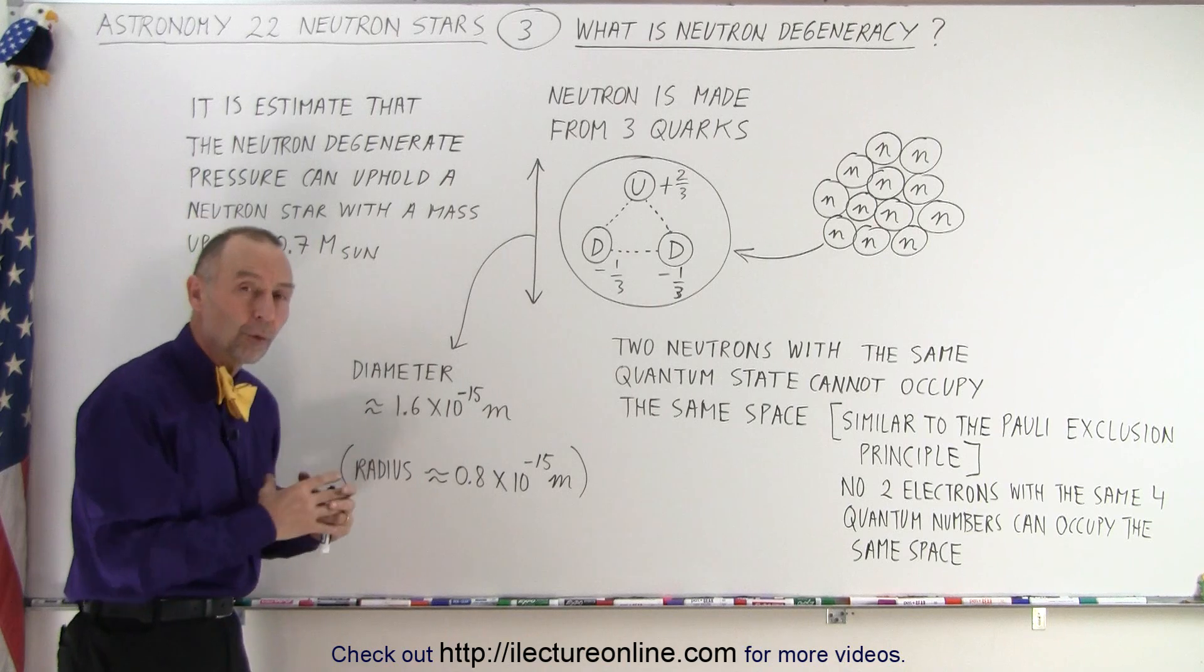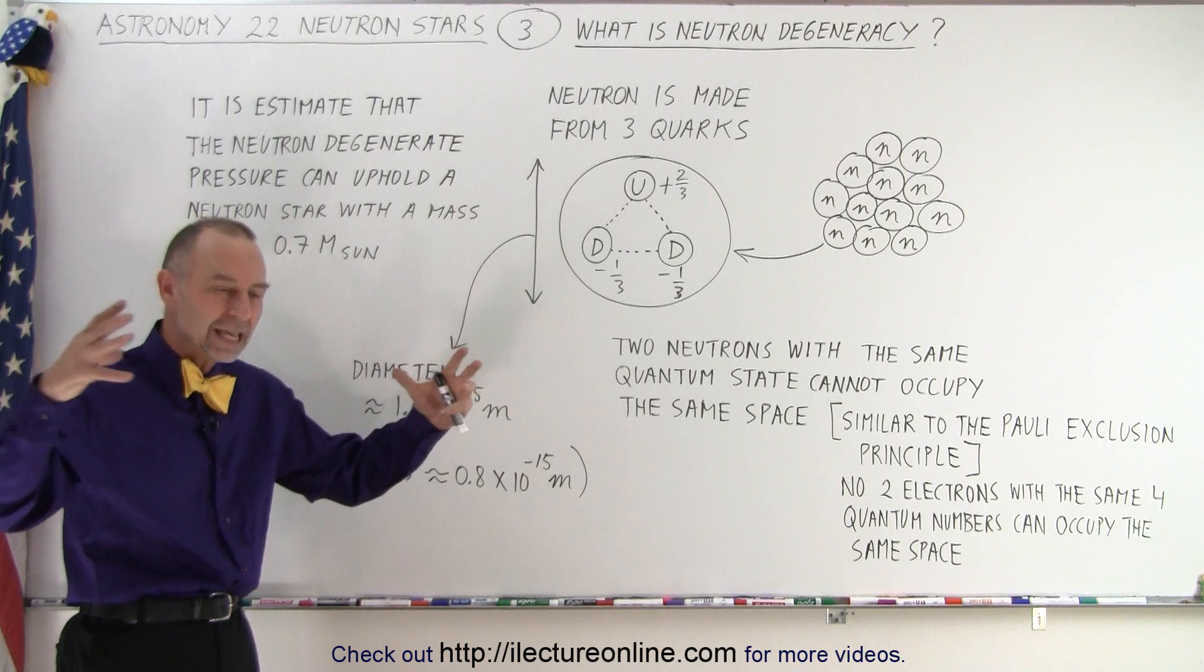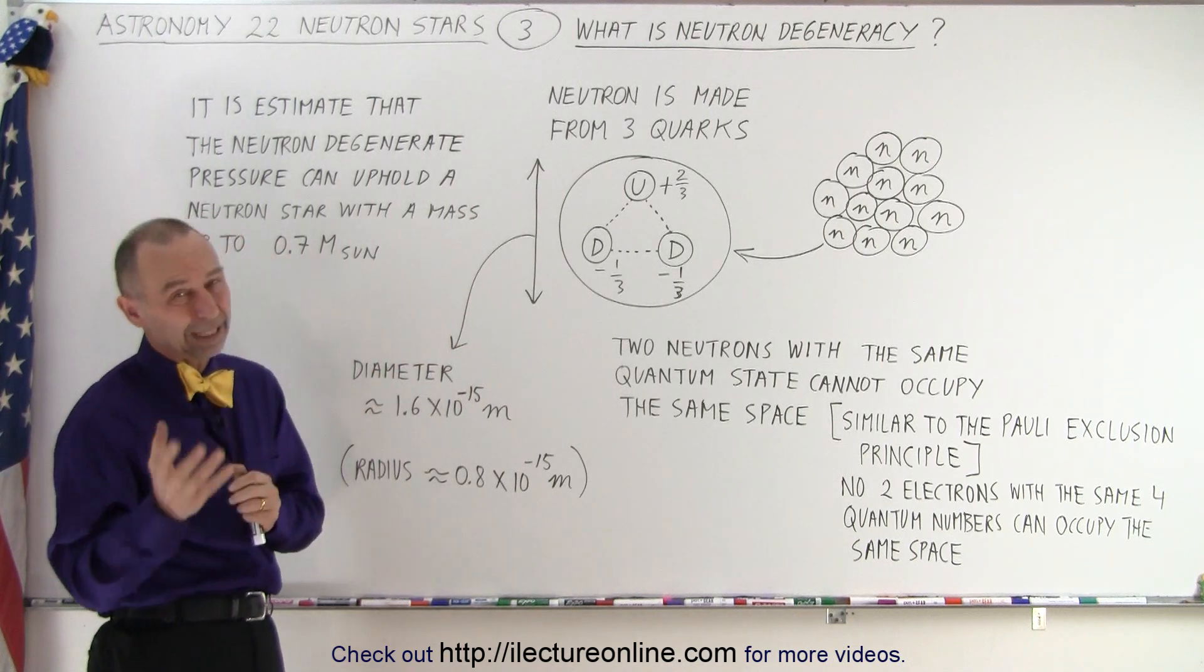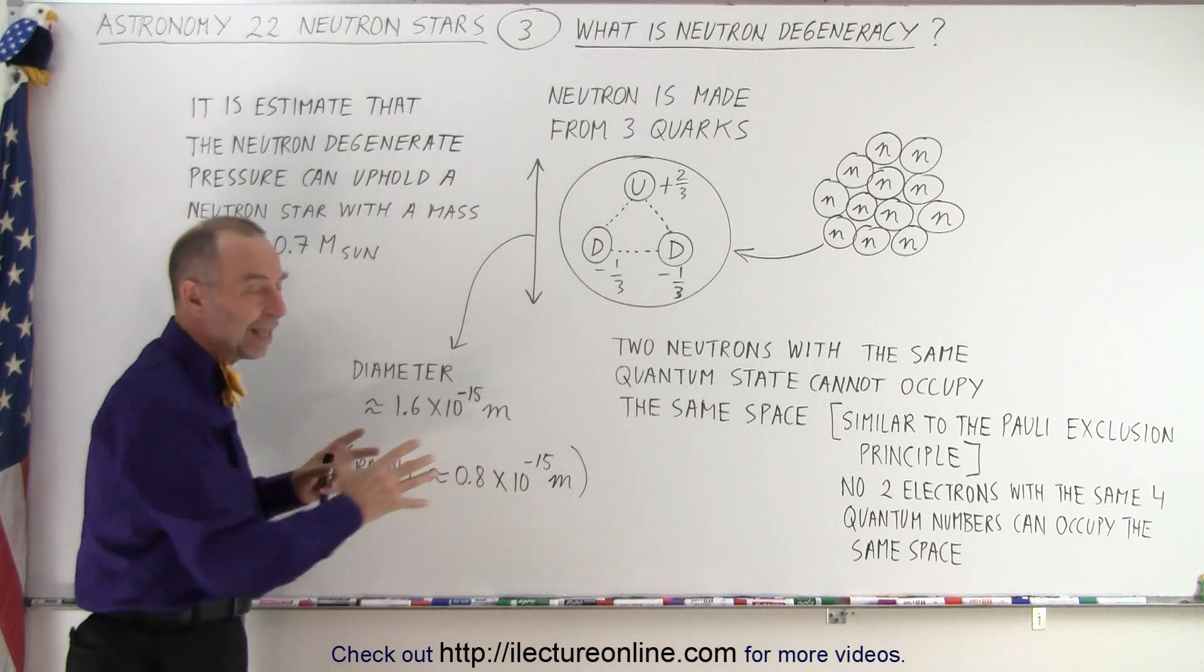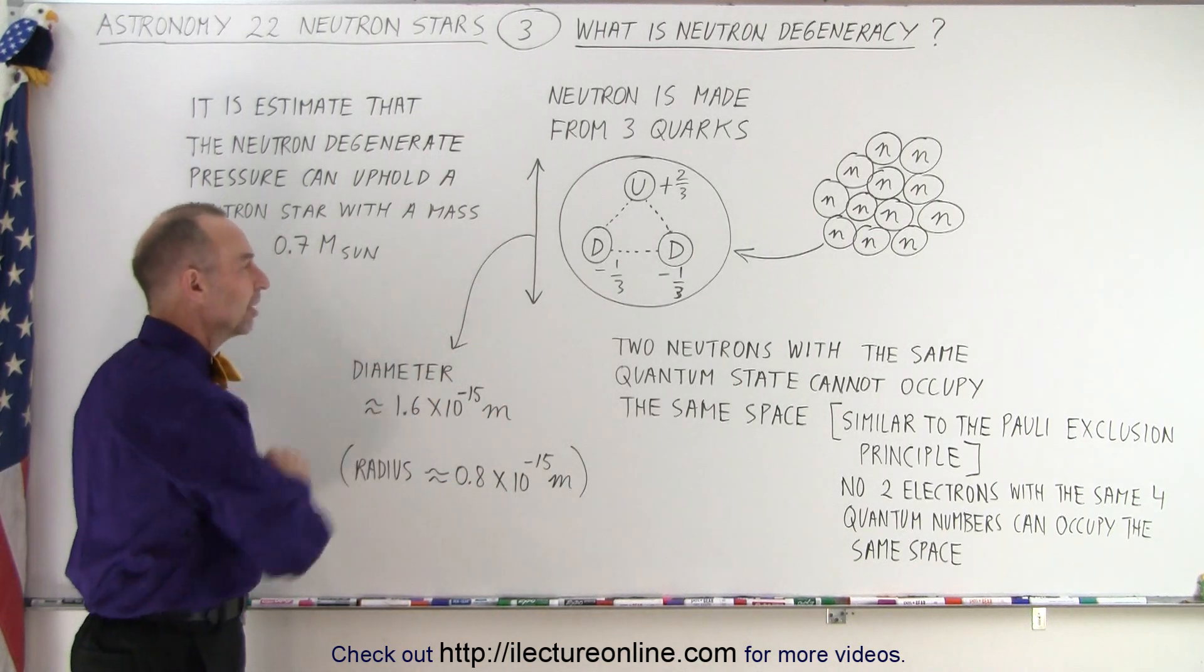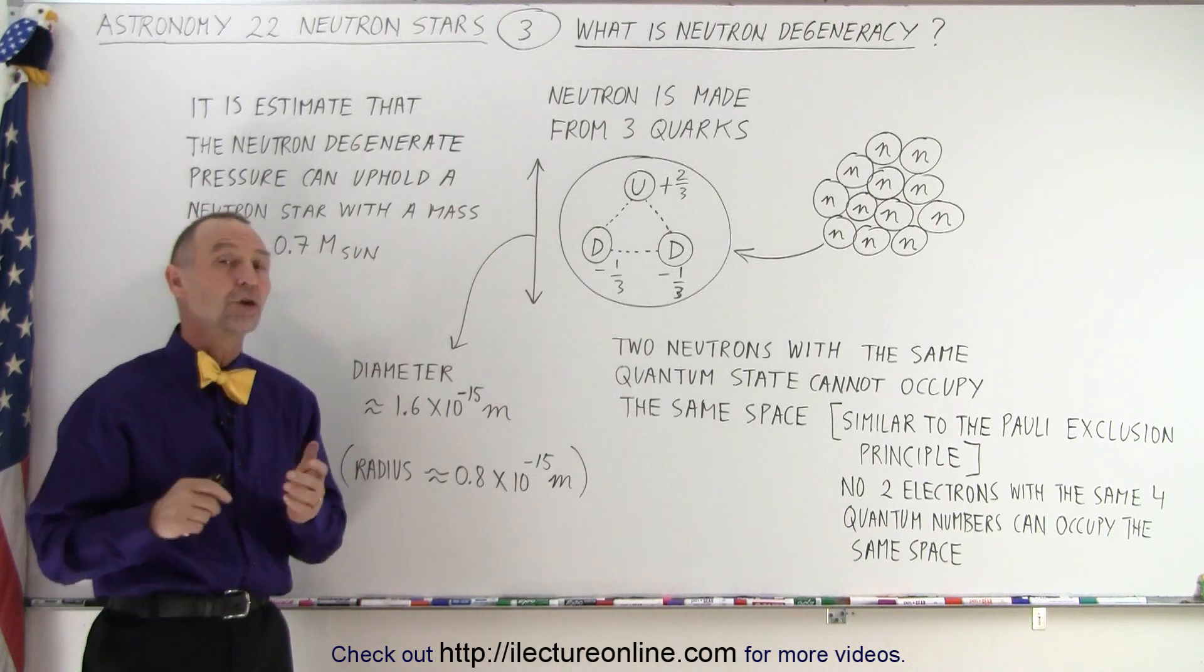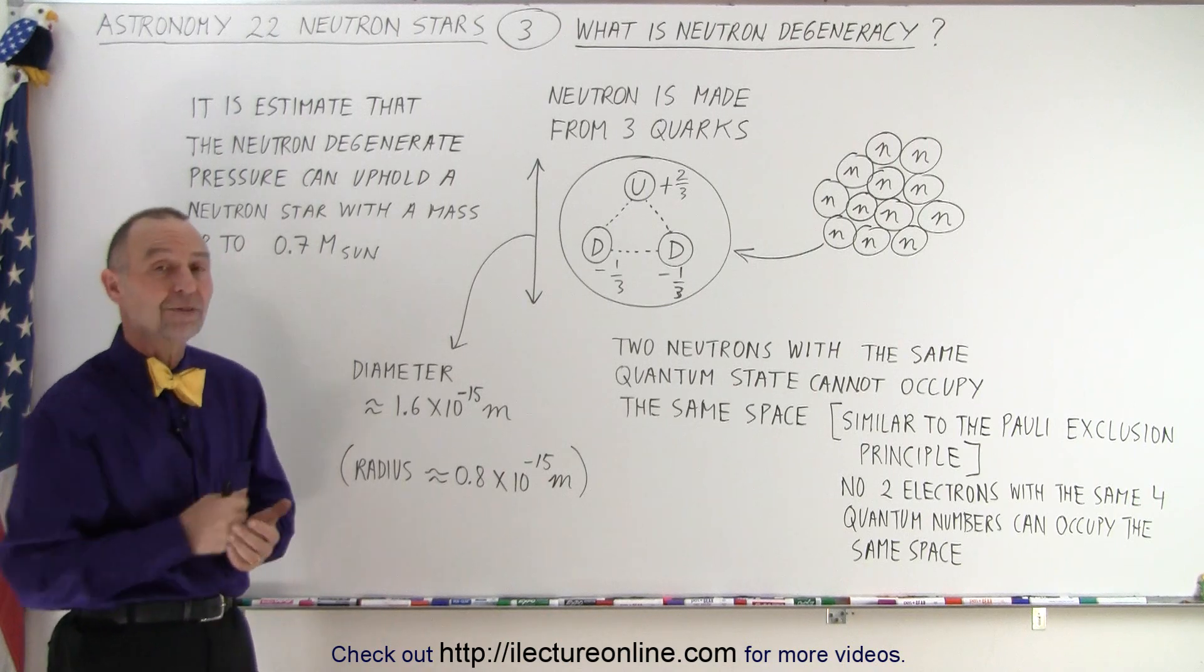So we know that neutron degeneracy alone cannot stop the collapse of a core. There must be some other force, and we know what that other force is. That other force is the repulsive forces of the nuclear strong force. We'll get into that in the next video. But at least this is half the equation. Half the arrest of the collapse is done by the neutron degeneracy. The other half is done by the nuclear strong force.